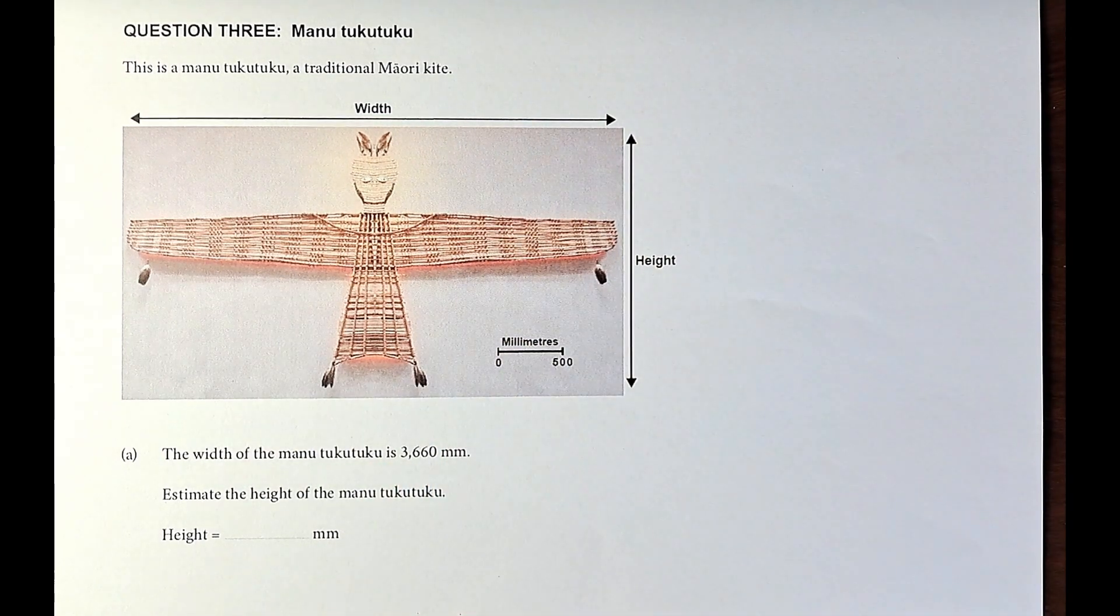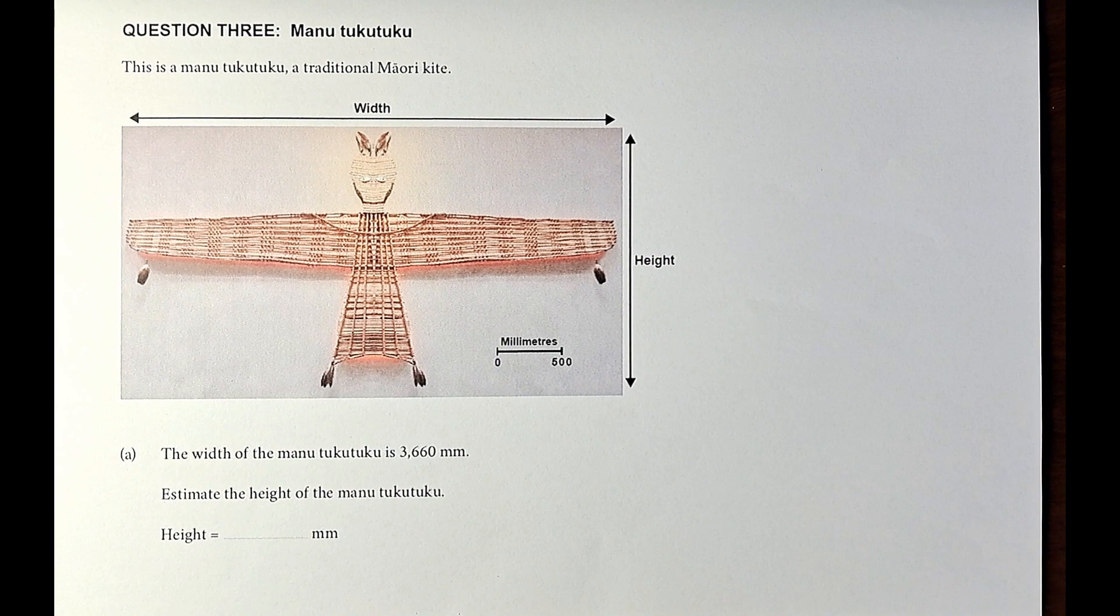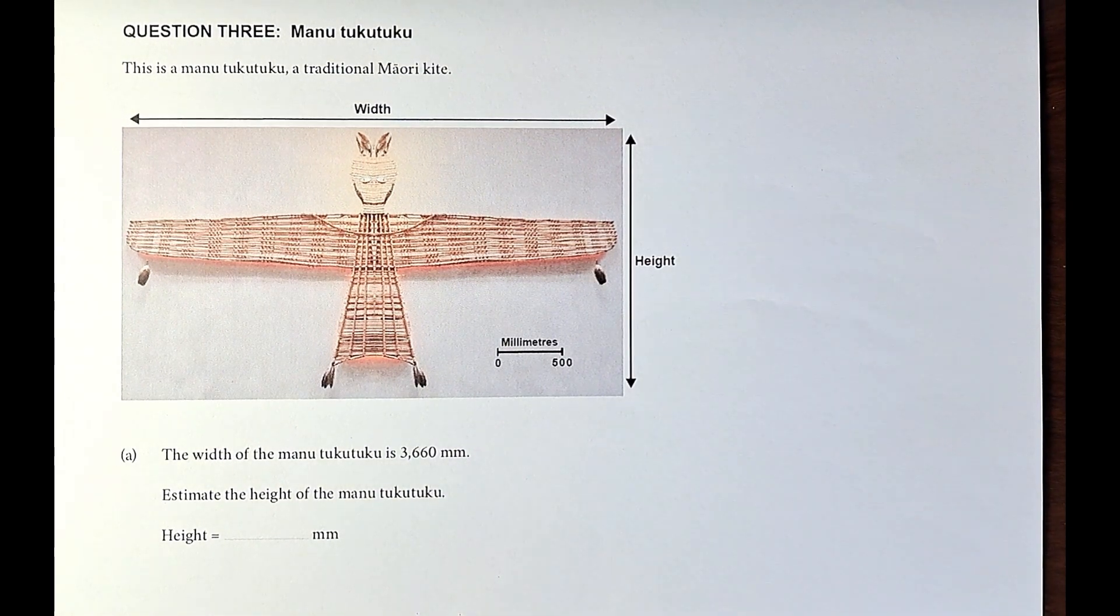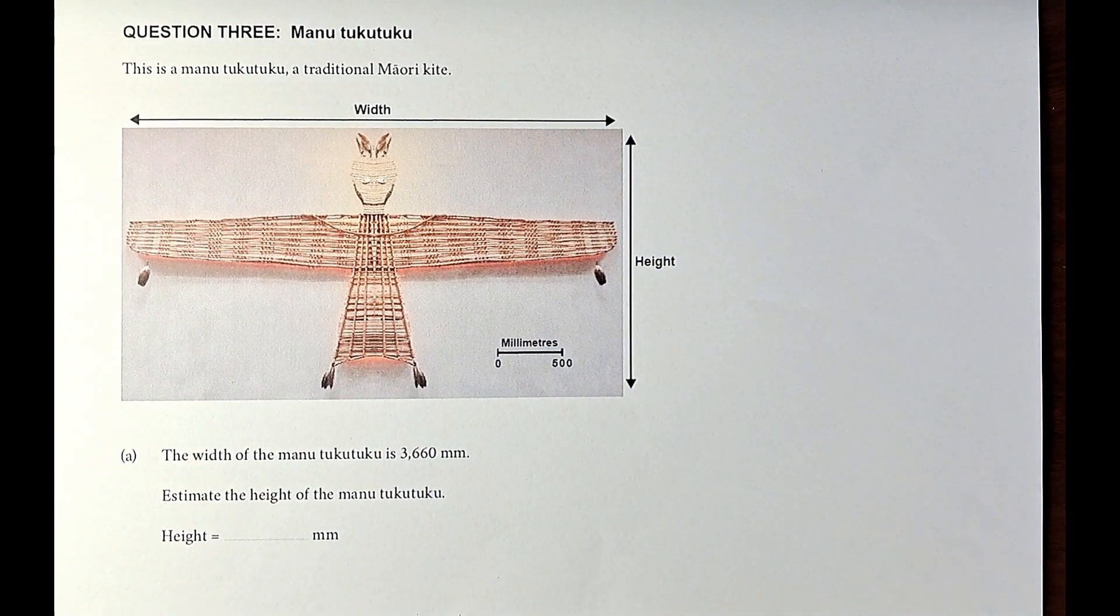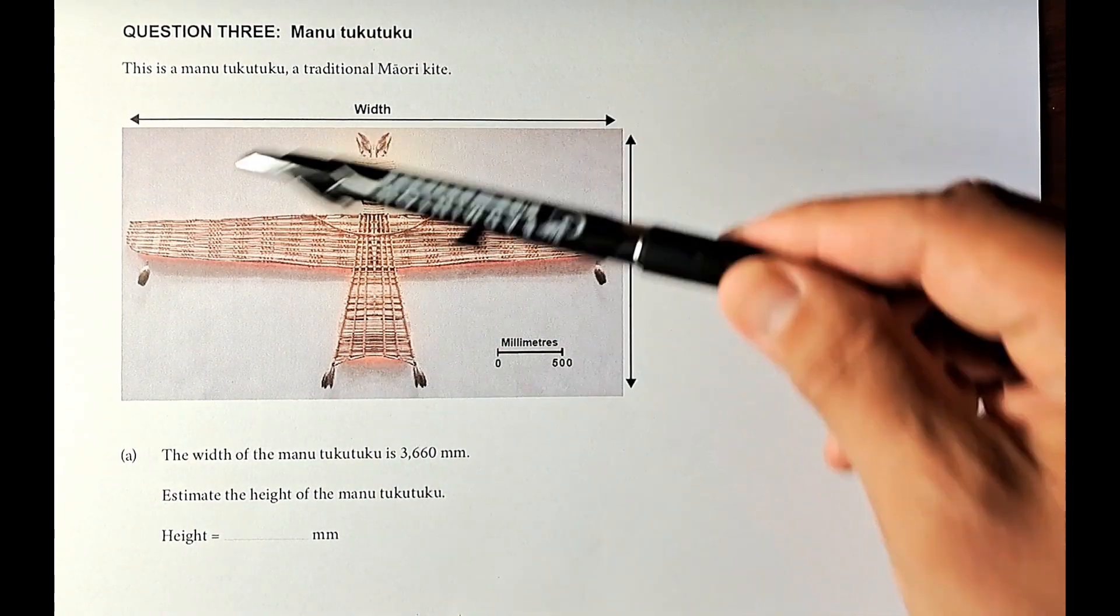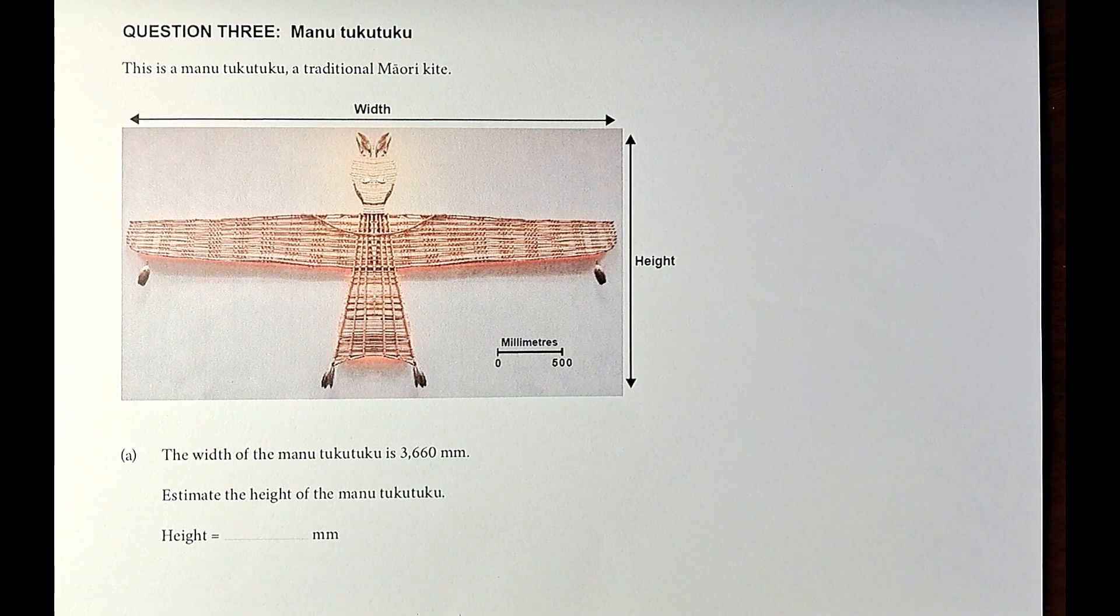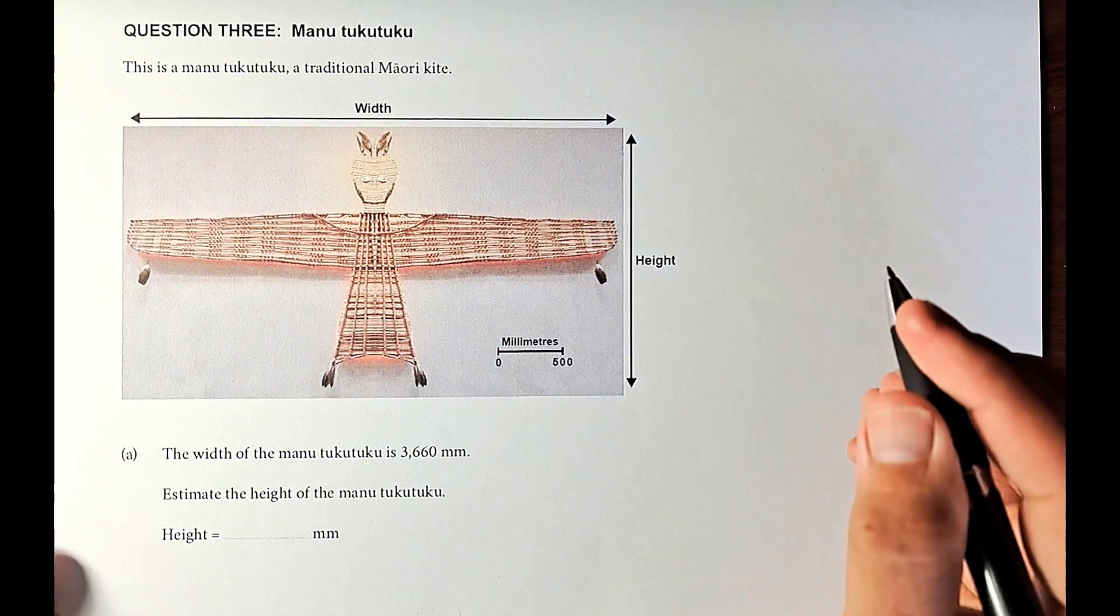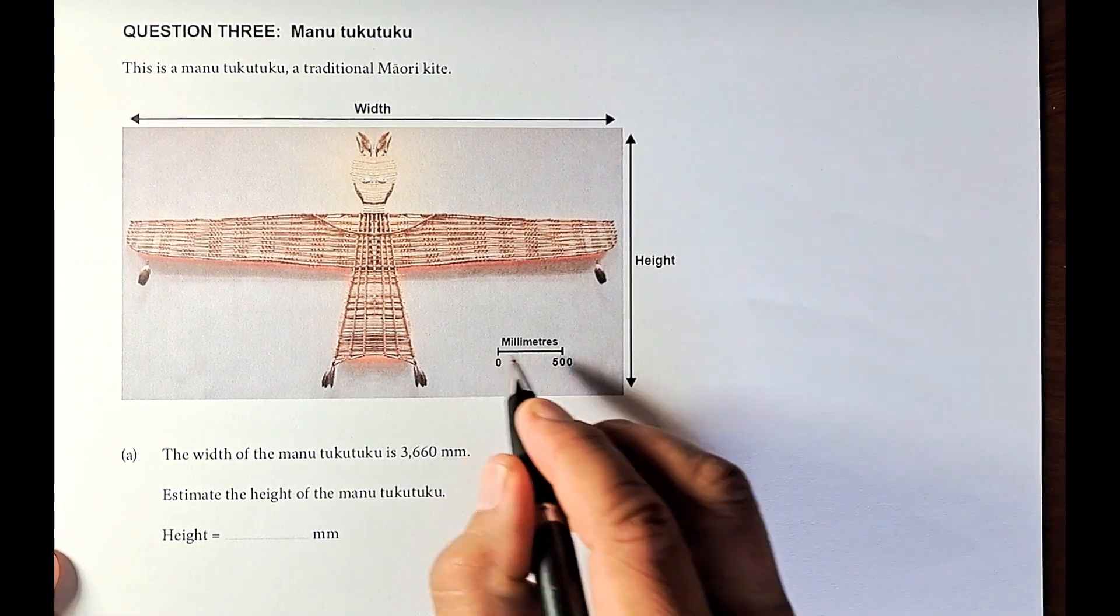This is the picture of the kite there. The width of the Manu Tuku Tuku is about 3660mm. Estimate the height of the Manu Tuku Tuku. To get the height, the scale is that. Here to here is around 500mm.